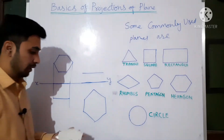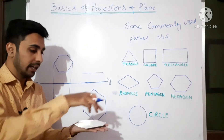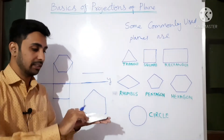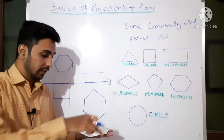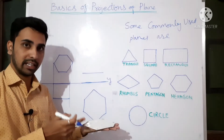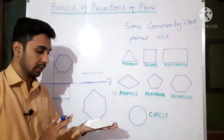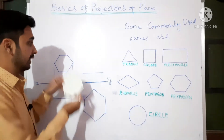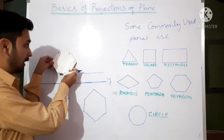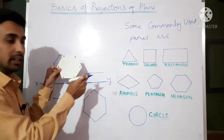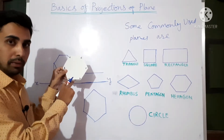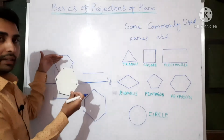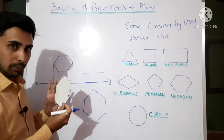So this is how it works: if it is resting on HP, its surface will be visible in the top view. Note this — if it is resting by its surface on HP, the shape of the object is visible from the top. Similarly, if it is in the VP or in front of VP, the shape of the object will be visible from the front, which falls above the XY line.